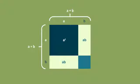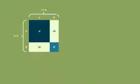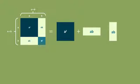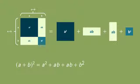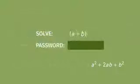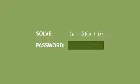B times b is b squared. He adds the four terms together, groups the like terms, and finally writes the expression in standard form. The result: a squared plus 2ab plus b squared. He knows he's got this, so he enters the password.